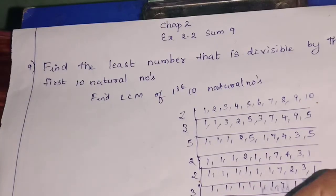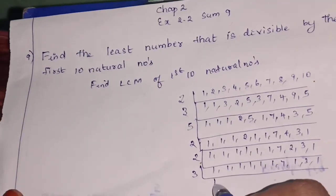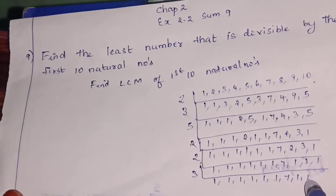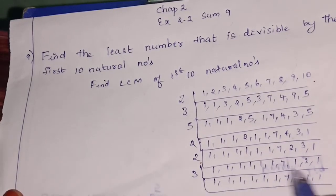Next to go for 3. 1, 1, 1, 1, 1, 1, 7 as it is, 1, 1, 1.